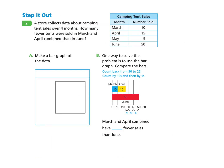Let's turn to the next page, page 482, under Step It Out, Part 2. A store collects data about camping tent sales over four months. How many fewer tents were sold in March and April combined than in June? Our first instruction tells us to make a bar graph of the data. We see camping tent sales with the month and number of tents sold across four months: March, April, May, and June.